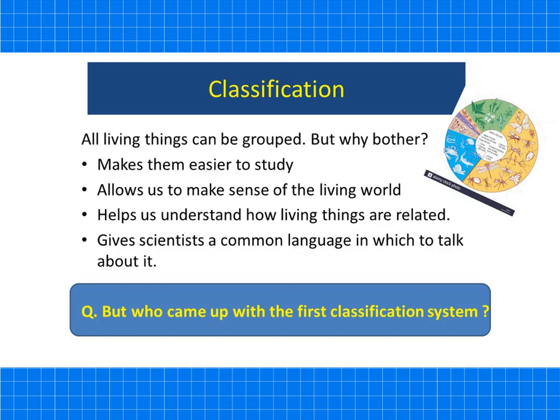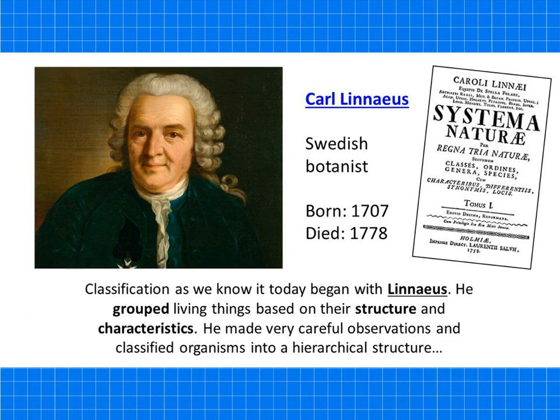Who came up with the first classification system? That would be Carl Linnaeus. Carl Linnaeus was a Swedish botanist, born in 1707 and died in 1778 — a very good long life for that era. He started to group things together based on their structure and characteristics, making very careful observations, and classified organisms into what we call a hierarchical structure.